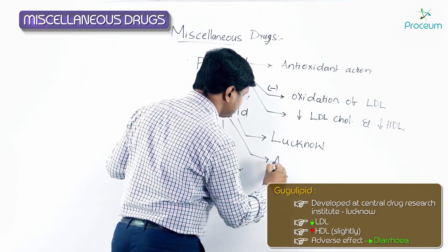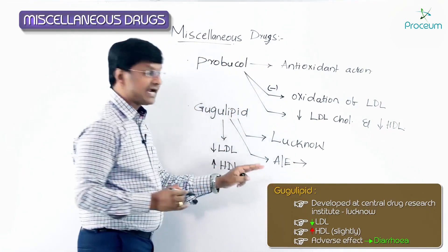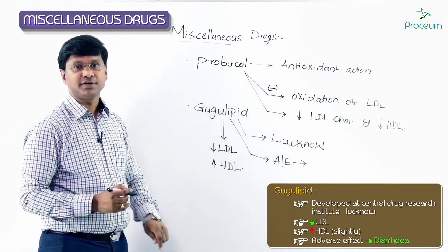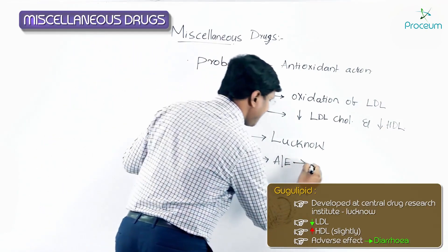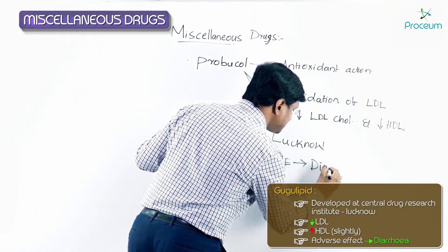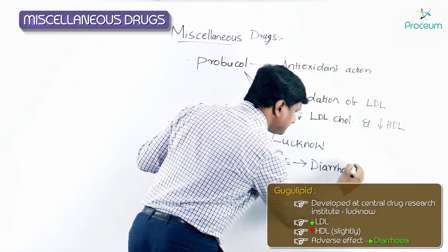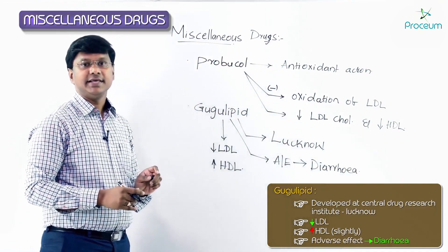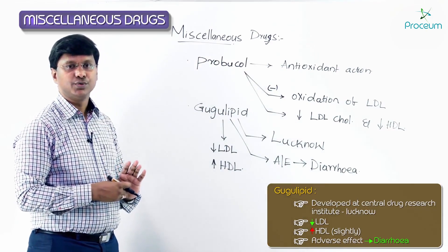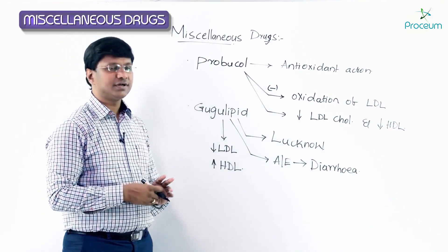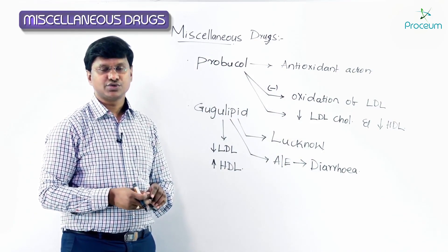The adverse effect seen with gugulipid is diarrhea. So these are the two other important drugs used for reducing cholesterol levels.